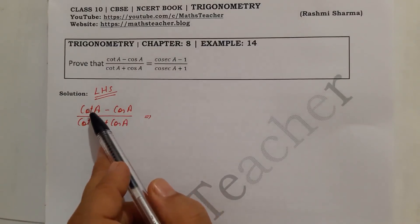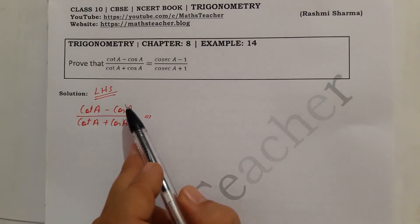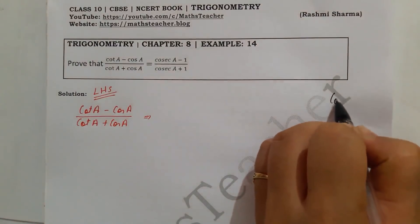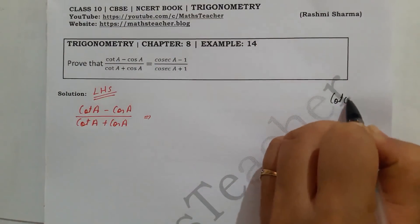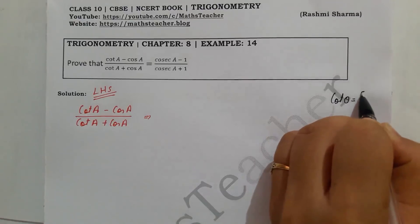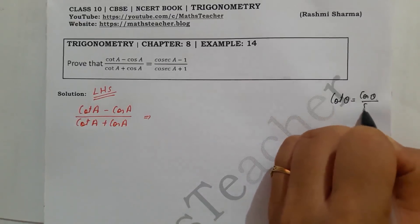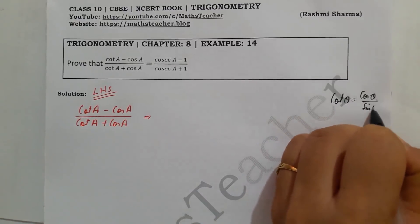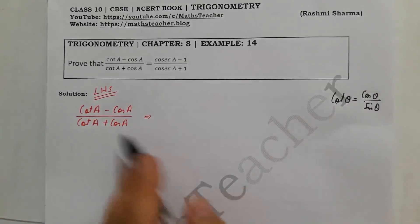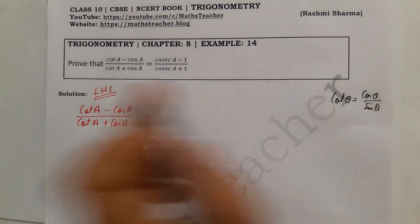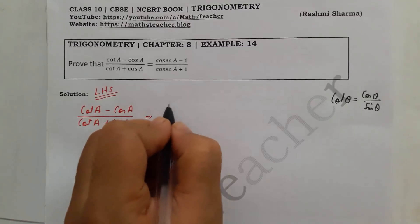We will convert cot in terms of cos and sin, writing cot A as cos A divided by sin A.